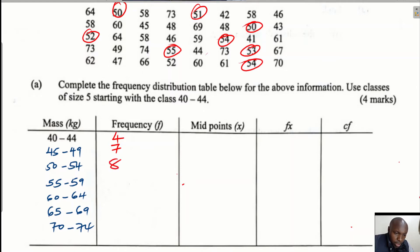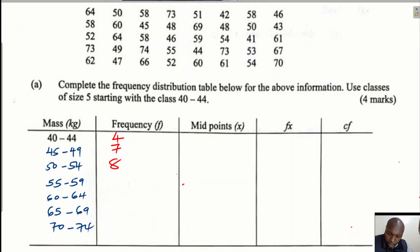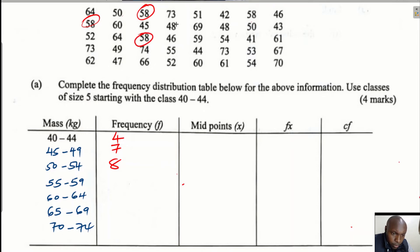Now checking the class 55 to 59. Going through the data: one is there, and continuing to check all values between 55 and 59 — one, two, three, four, five, six — there are six values in the class 55 to 59.